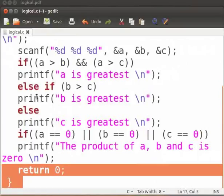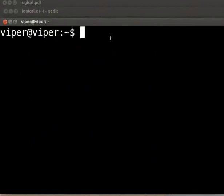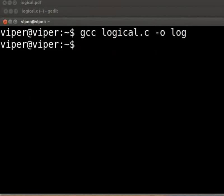Open the terminal by pressing ctrl, alt and t keys simultaneously. To compile the code, type gcc space logical dot c space minus o space log press enter. To execute, type dot slash log press enter.